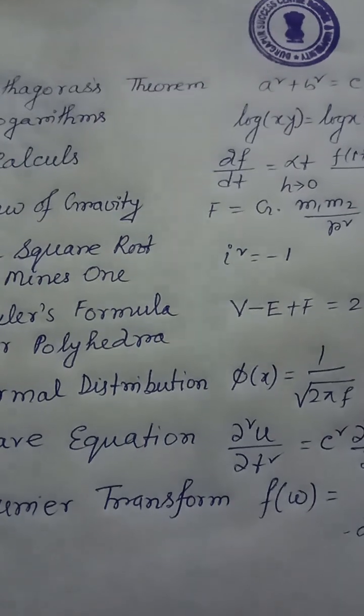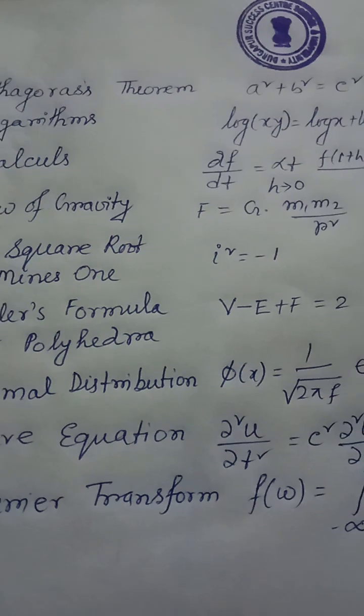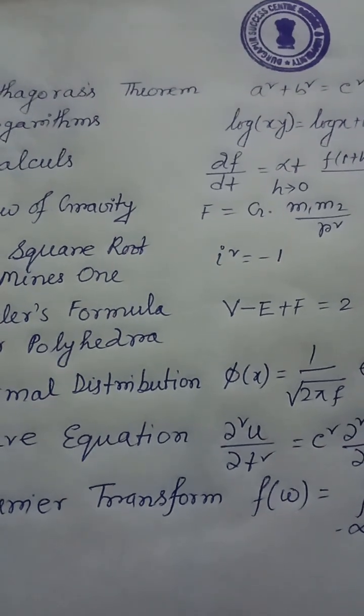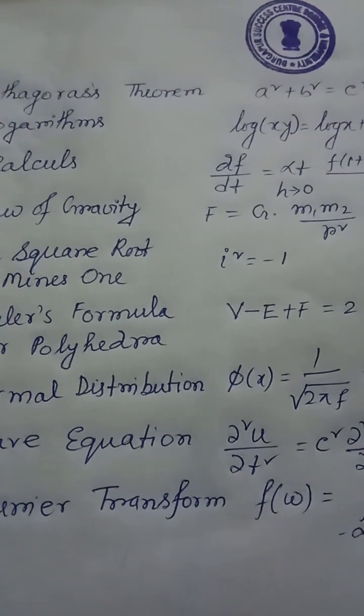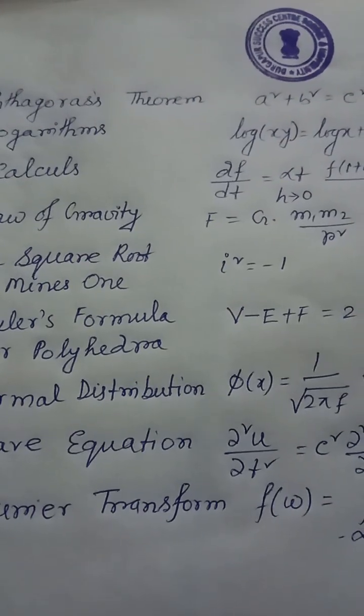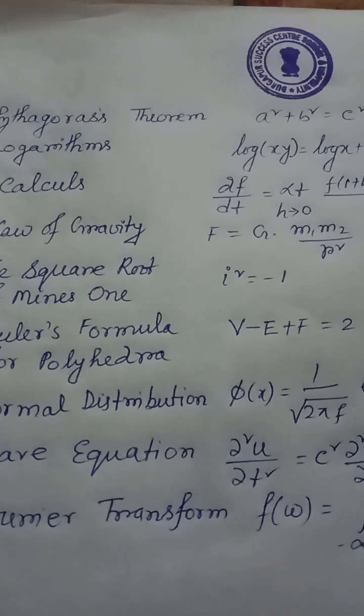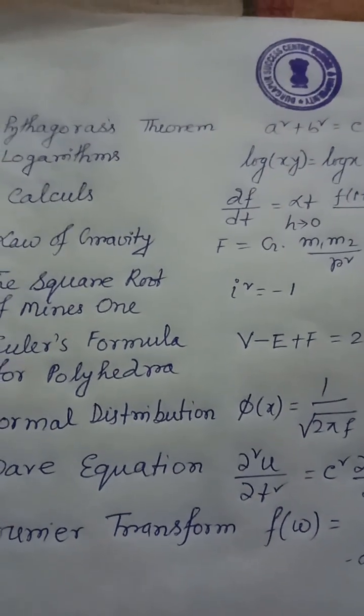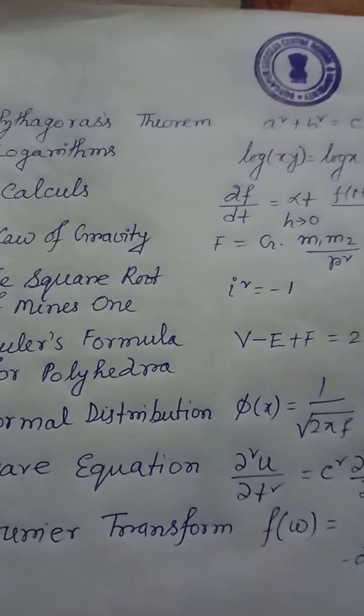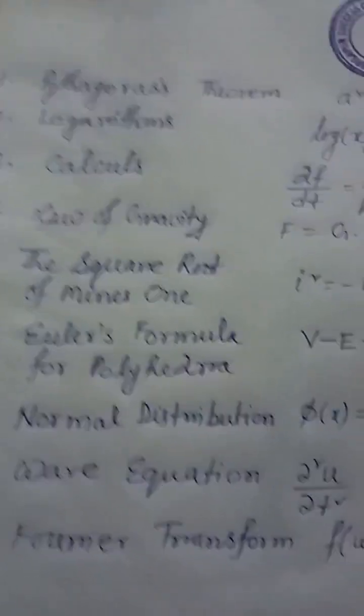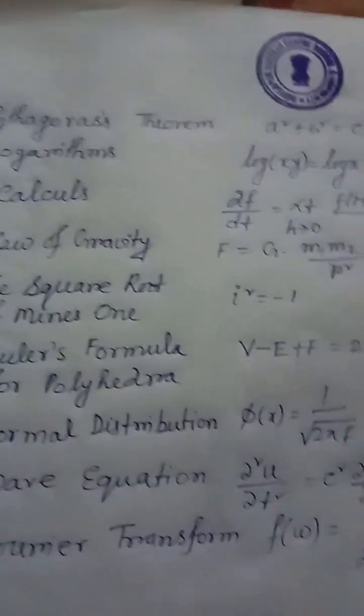17 equations that changed the world, by mathematics — Tuhin Sikdar. Equation 1: Pythagoras theorem — a² + b² = c², Pythagoras, 530 B.C.